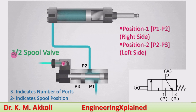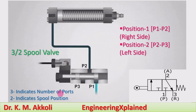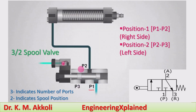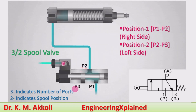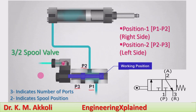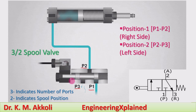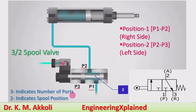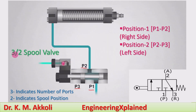The 3 indicates the number of ports in the valve. Here there are 3 ports: E1, P2, and E3. So 3 is the number of ports — there are 3 ports present.